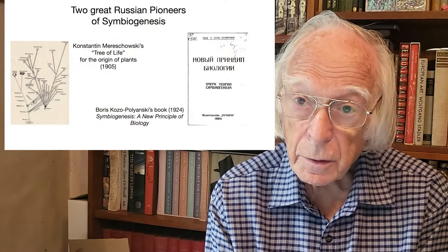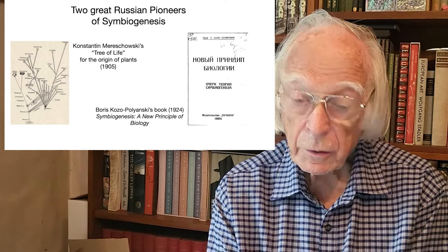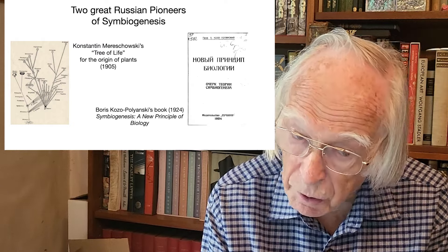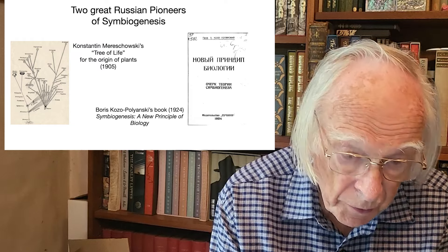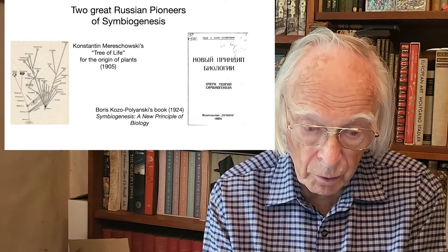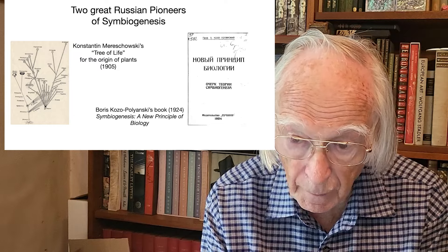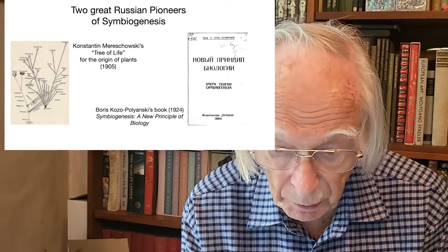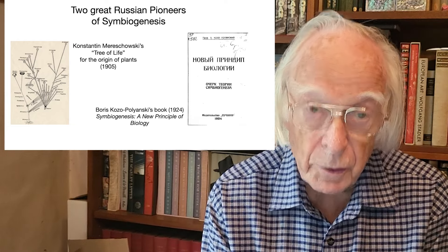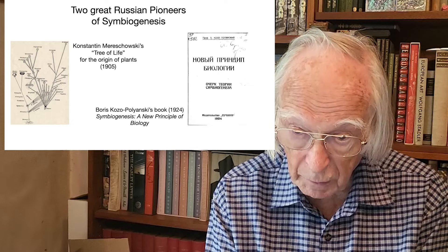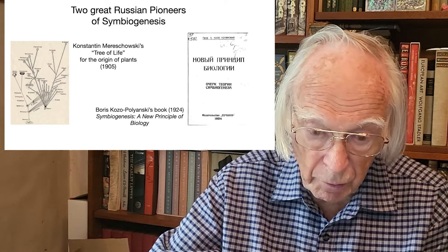Here are the two great Russian pioneers of symbiogenesis that Lynn Margulis acknowledged generously. On the left is a diagram from Konstantin Merischkowski's Tree of Life for the Origin of Plants, showing two forms of symbiogenesis giving rise to all various plant species. On the right is the cover page from Boris Kozopoliansky's book, published in 1924 — just a century ago — which he called Symbiogenesis: A New Principle of Biology, translated from the Russian into English.